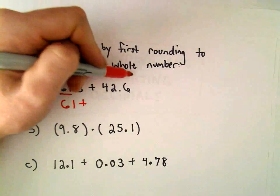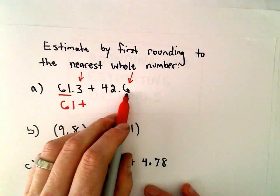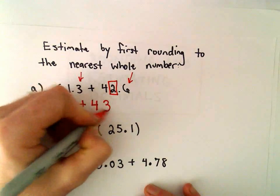So this will just turn into 61. 42.6, okay, again, we look at the 6.